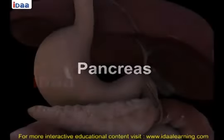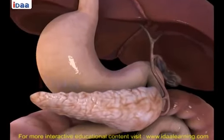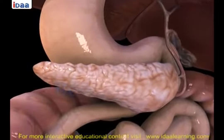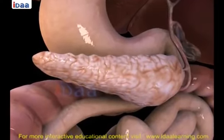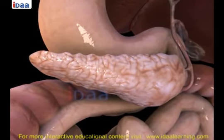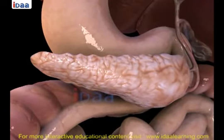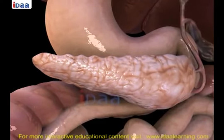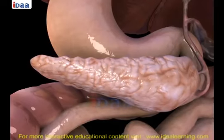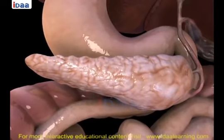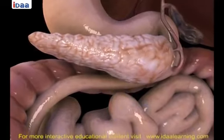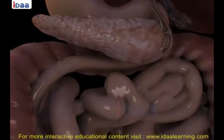Pancreas: the pancreas is a leaf-shaped, cream-colored gland located just below the stomach. It secretes pancreatic juice which acts on and breaks down carbohydrates, proteins, and fats. After this, the partially digested food reaches the lower part of the small intestine where intestinal juices act upon the food and complete digestion of any remaining components.